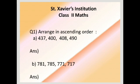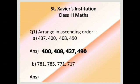So first we'll write 400, 408, 437, and then 490. Second sum: 781, 785, 771, 717. So smallest is 717, followed by 771, then 781, and finally 785.